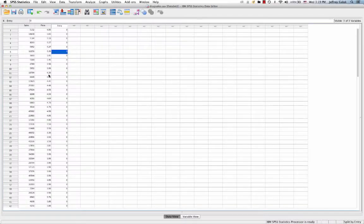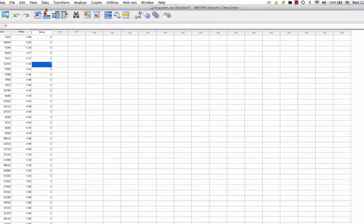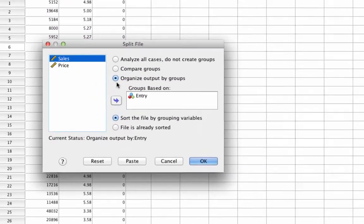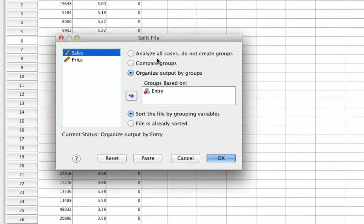So if we come to our data, the very first thing that we need to do is actually unsplit our data file. Because if you remember last time, we split the data file in order to run two separate regression analyses. If we don't unsplit the file, we'll never be able to run the analysis that we need. So to do that, we just go to data, split file. And instead of organizing the groups by entry, we just want to analyze all cases, do not create any groups. So this is just unsplitting the data.